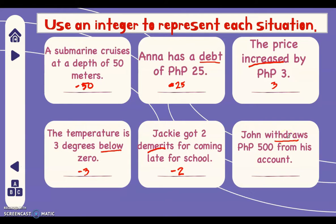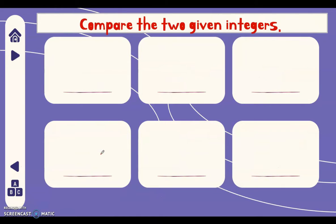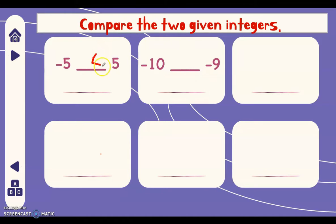Last one: John withdraws 500 pesos from his account. 'Withdrawal' represents negative, so we write negative 500. Now let's compare two given integers. We have negative five and five — the answer is less than, so negative five is less than five. Next, negative ten and negative nine: negative nine is greater than negative ten.